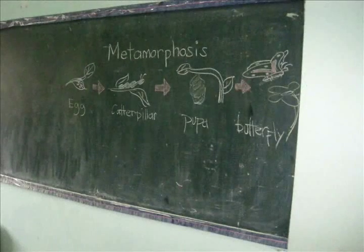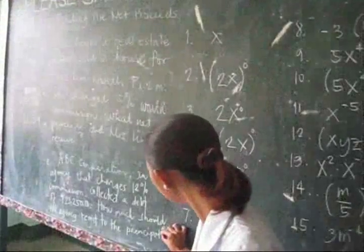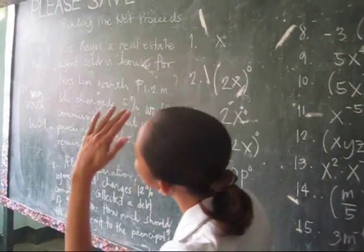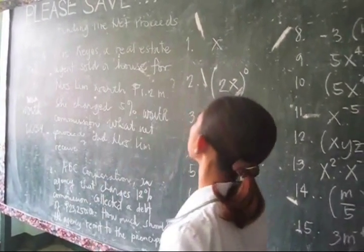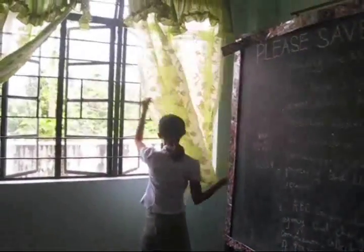Number eight: Look at your board work from all corners of the room to test if pupils from all sides of the classroom can read your board work. Number nine: If there is glare on the chalkboard at certain times of the day, a curtain on the window may solve the problem.